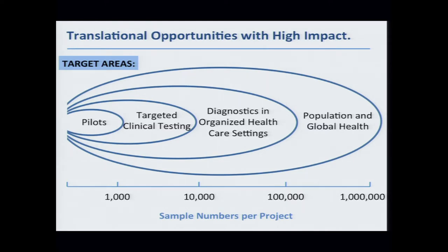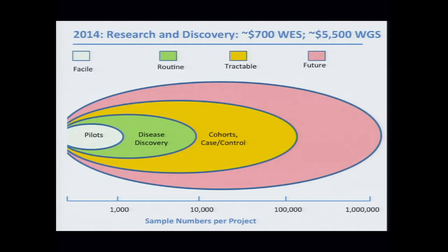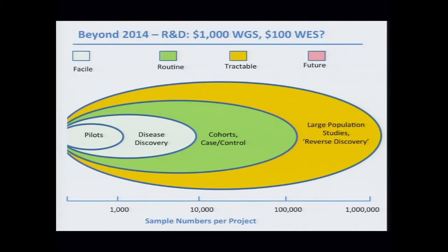The scale on the bottom is a log scale — thousands, tens of thousands, hundreds of thousands, and eventually millions. As you heard from Eric, we're currently doing research in a $700 exome and $5,000 whole genome world, doing disease discovery in projects of around 1,000 to 5,000 samples, and already looking at cohorts with 10,000 samples or more. As Rick pointed out, developing technologies will move us into a truly large-scale range. But that is the research domain.